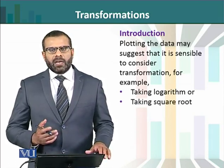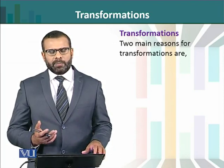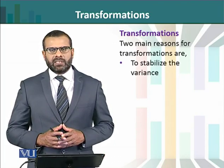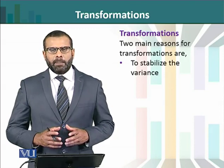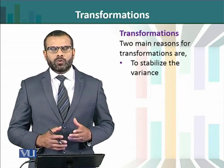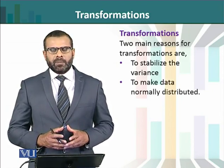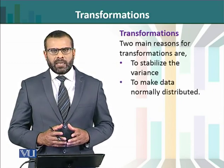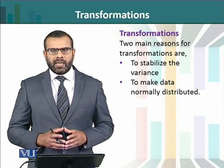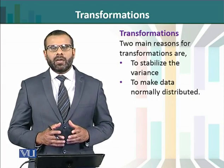Looking at these two main transformations and their purpose — why we use them — the first point is that the variance of our time series needs to be stable, so we establish this transformation. The second point is that our time series must meet the normality requirement. If the data is not normally distributed, this transformation will address that, making the data normally distributed.